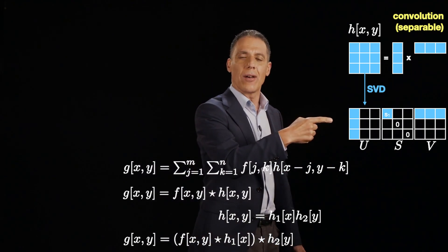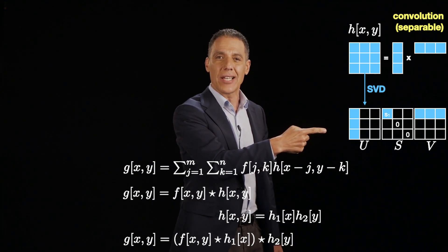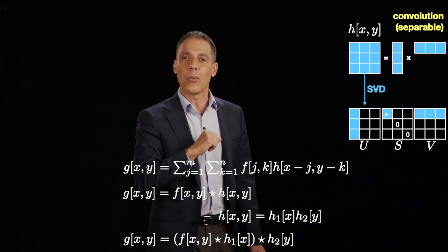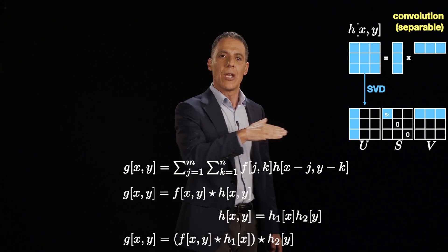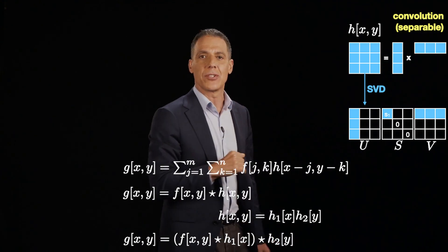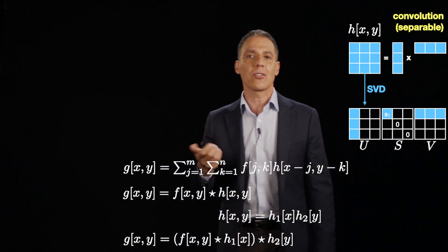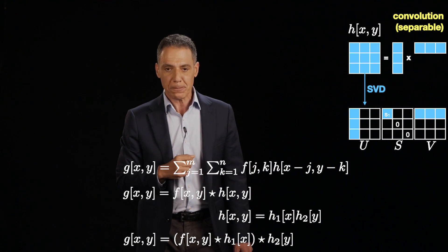And so every once in a while, it's not always, but every once in a while, you get lucky. And you'll hear about this, by the way, in deep learning and deep neural networks. People love these separable filters because they're computationally so much more efficient.